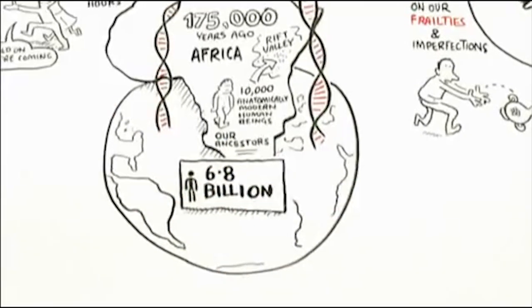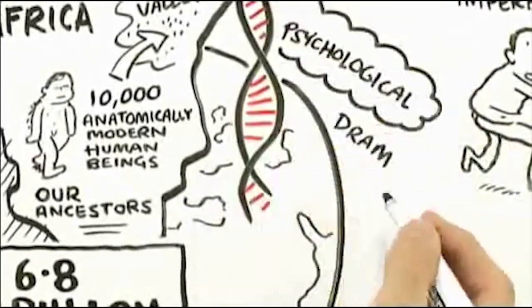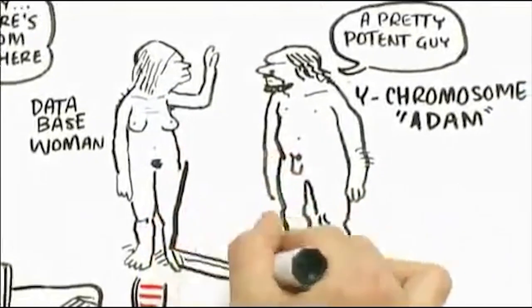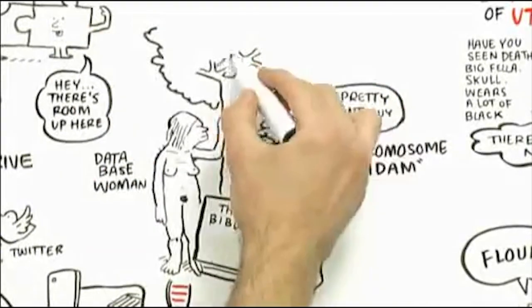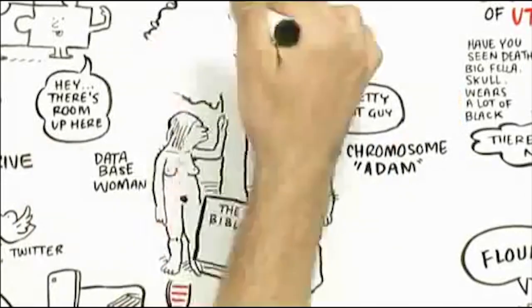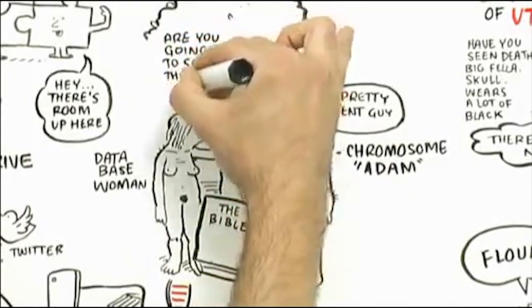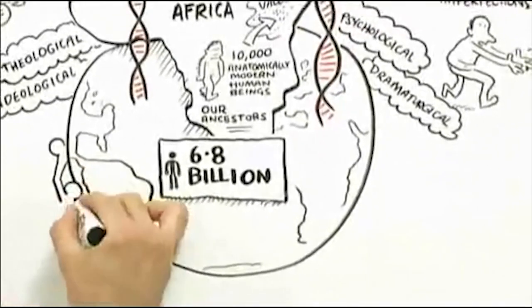Six point eight billion people at various stages of consciousness, theological, ideological, psychological, dramaturgical. We're all fighting with each other with different ideas about the world. And guess what? We all came from two people. The Bible got this one right. We could have come from many. But the point is, we have to begin thinking as an extended family. We have to broaden our sense of identity.